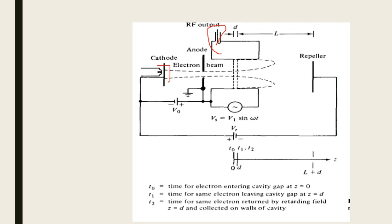The input is Vs = V1 sin(ωt). The electrons, after getting interacted — the fast-moving electrons will move at a faster speed, the slow-moving electrons will reach at a slower pace, and the zero cross-section velocities will be even lesser.